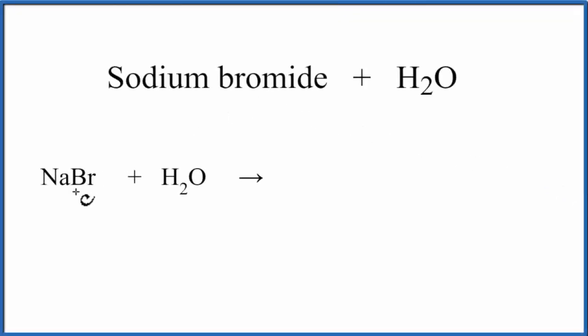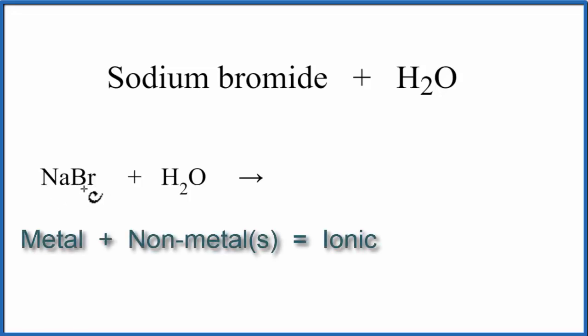In this video, we'll look at the equation for NaBr plus H2O, that's sodium bromide plus water. In sodium bromide, we have sodium, which is a metal, and bromine, which is a non-metal. When we have a metal and a non-metal, we have an ionic compound, so we're going to have some ions.